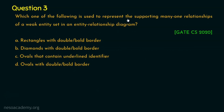Question number three: which one of the following is used to represent the supporting many-to-one relationship of a weak entity set in an entity-relationship diagram? This was asked in GATE Computer Science 2020. Option A: rectangles with double or bold border. Option B: diamonds with double or bold border. Option C: ovals that contain an underlined identifier. Option D: ovals with double or bold border. Your 20 seconds starts now.